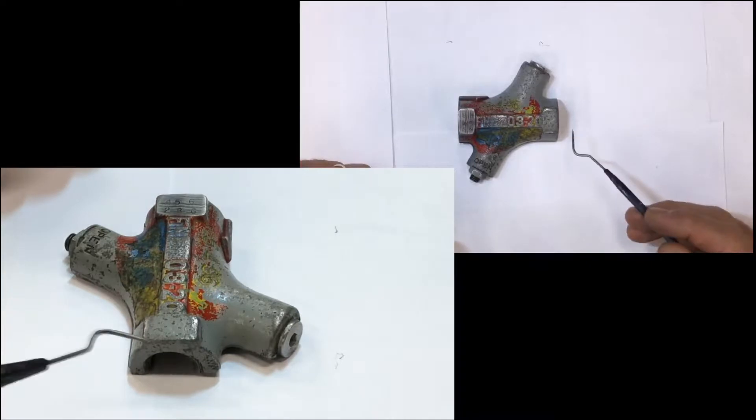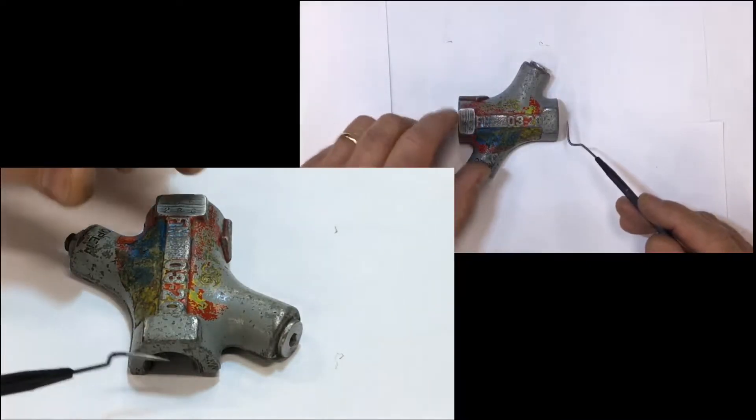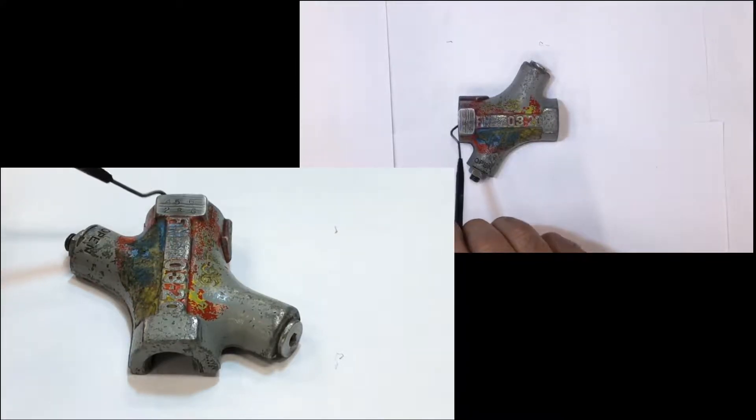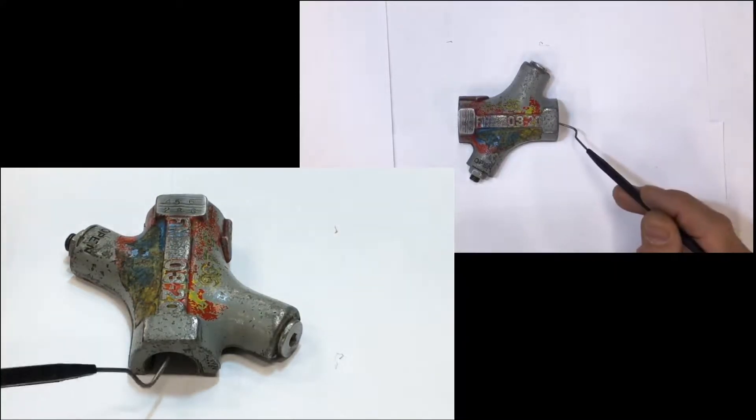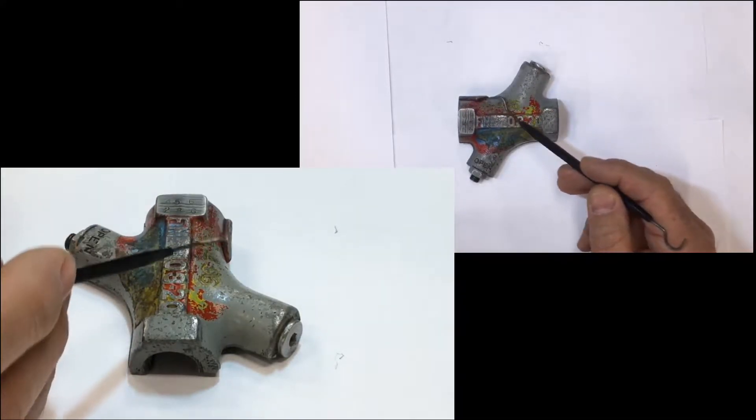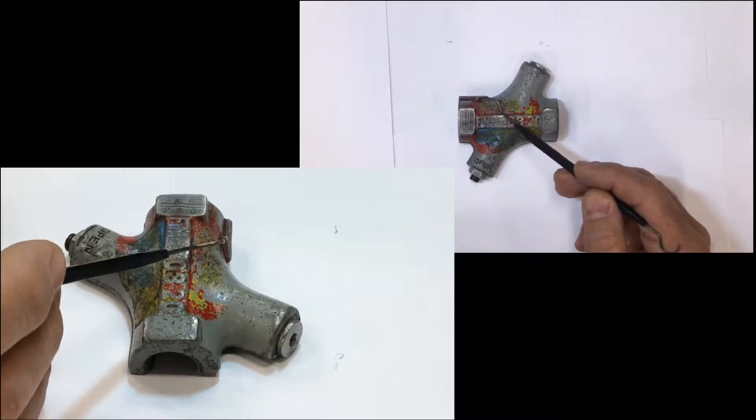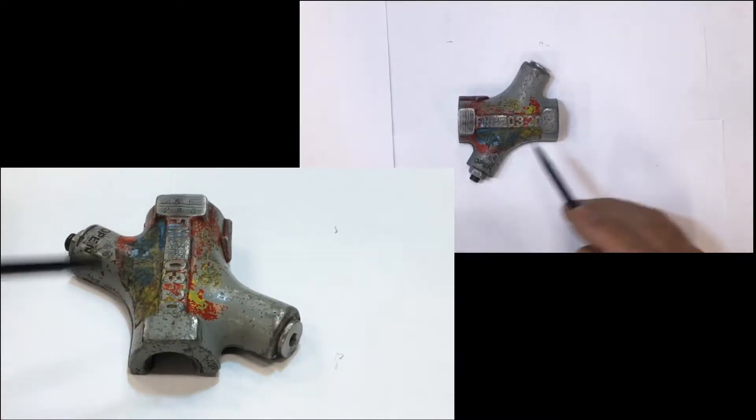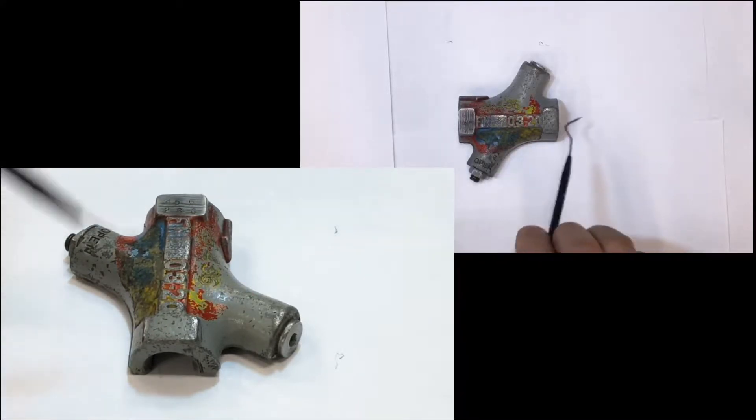Here we have another variable orifice style. Notice we have an oil port on this side and an oil port on this side. There's an arrow cast into this variable orifice. This arrow is showing the direction of free flow.